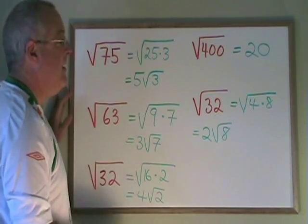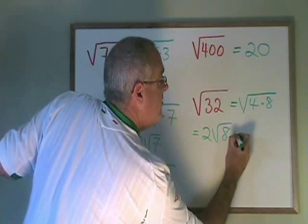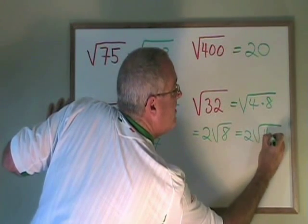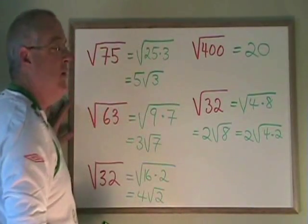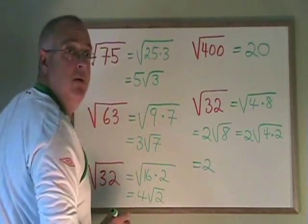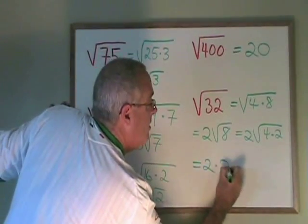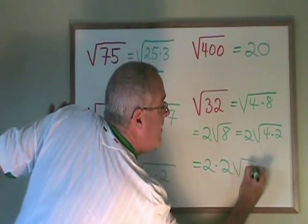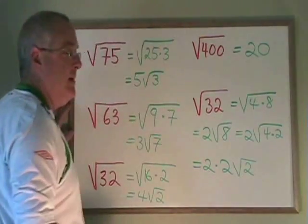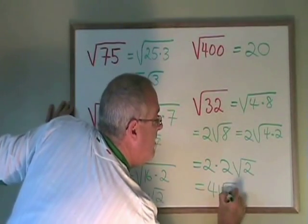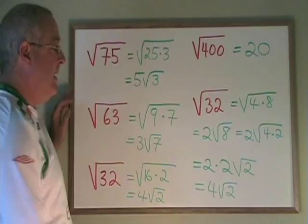But then we have to notice that 8 also has a factor that is a square, 4 again. So we can write 2 root 8 as 2 root 4 times 2. Since the square root of 4 is 2, we bring a 2 to the outside. We have our original 2 times a new 2 that comes from the square root of 4. And we have root 2. Since 2 times 2 is 4, we end up writing 4 root 2 as our final answer.